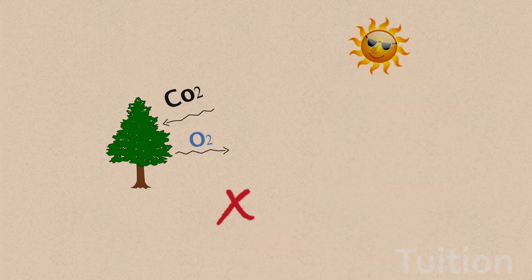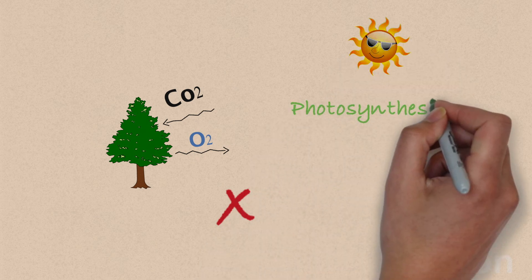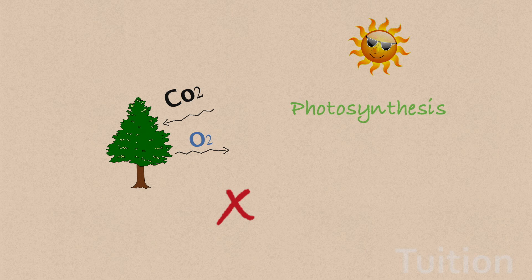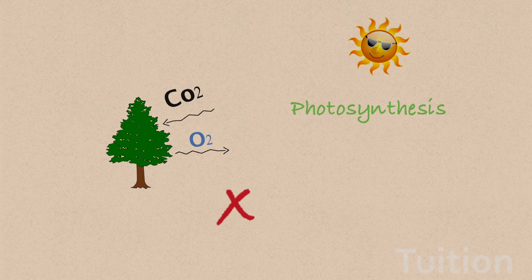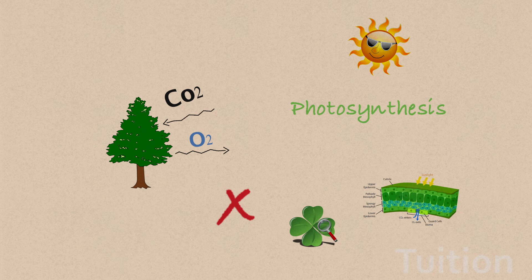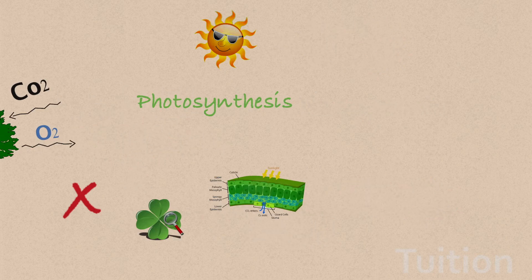In fact, this process is called photosynthesis, the process through which plants prepare their own food. It takes place only in the parts of the plant that contain chlorophyll, that is only the green parts of the plants.